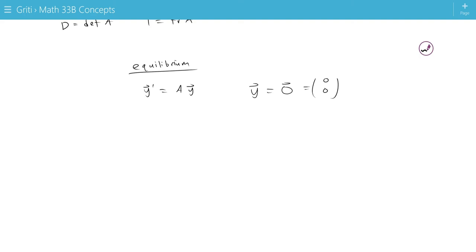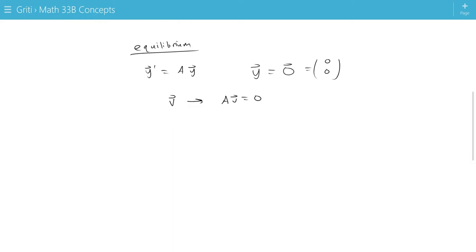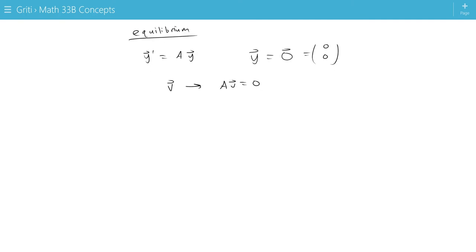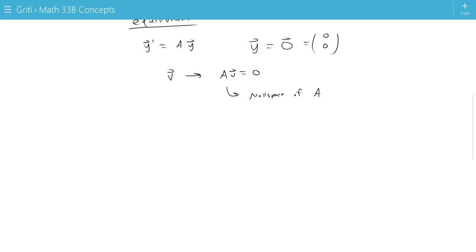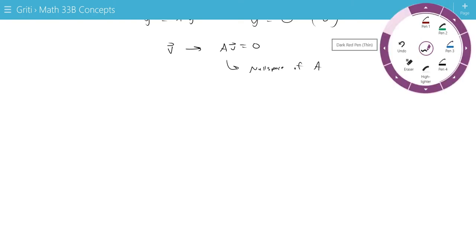But in general, the equilibrium is at a vector V, where AV equals 0. This is the null space of A. For most of these 2x2 systems, though, we will get an equilibrium at the origin. Let's look at the different cases.